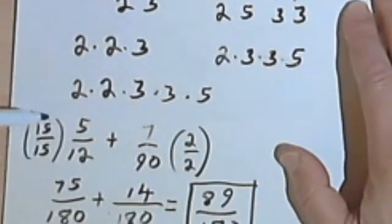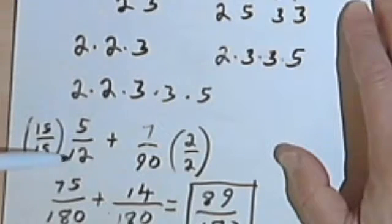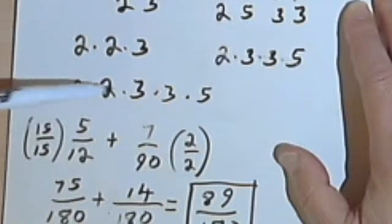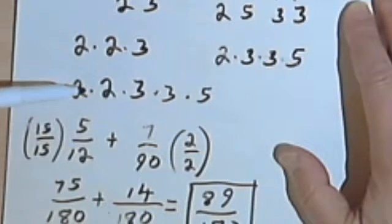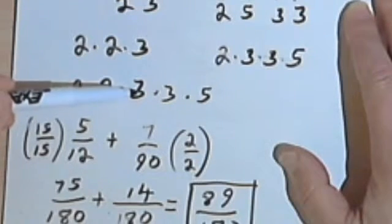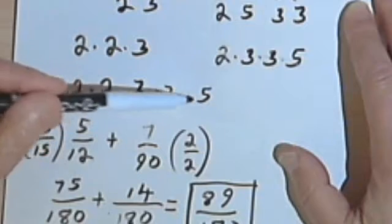Now to find out how I'm going to multiply, what I'll multiply the denominator of the first fraction by in order to get the common denominator, I see what is already part of the first fraction, the first denominator. And that was the 2 and the 2 and the 3, which meant I had to multiply by a 3 and a 5.